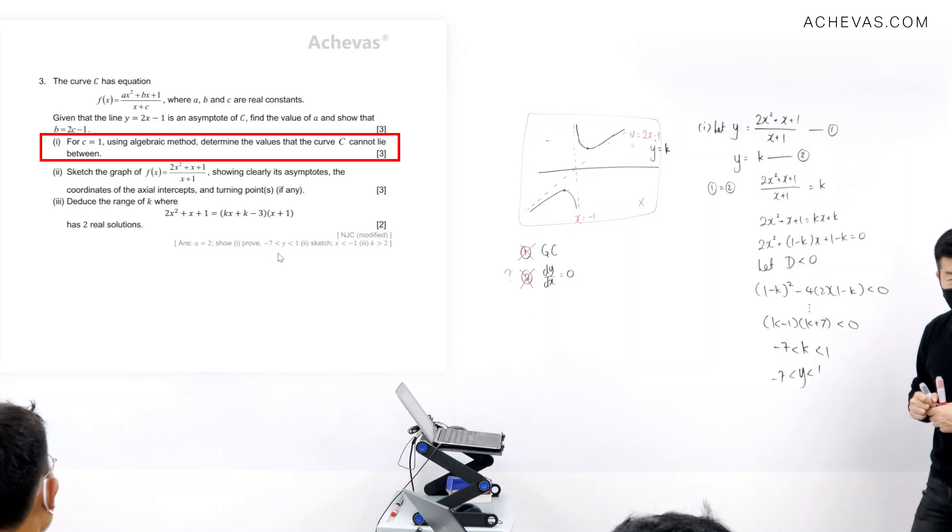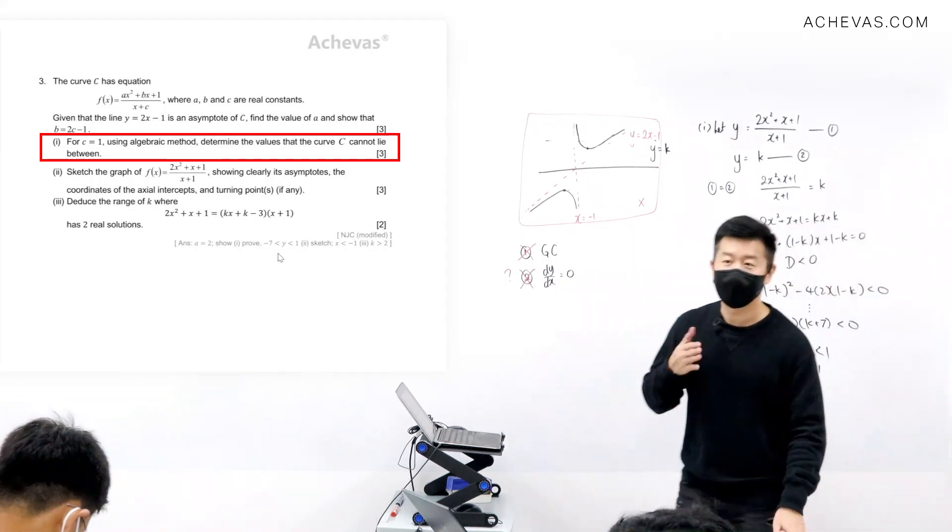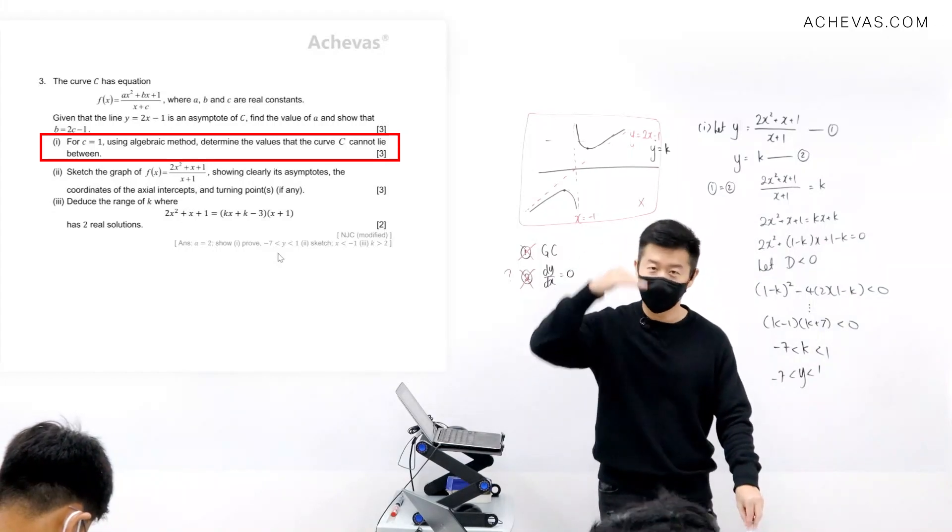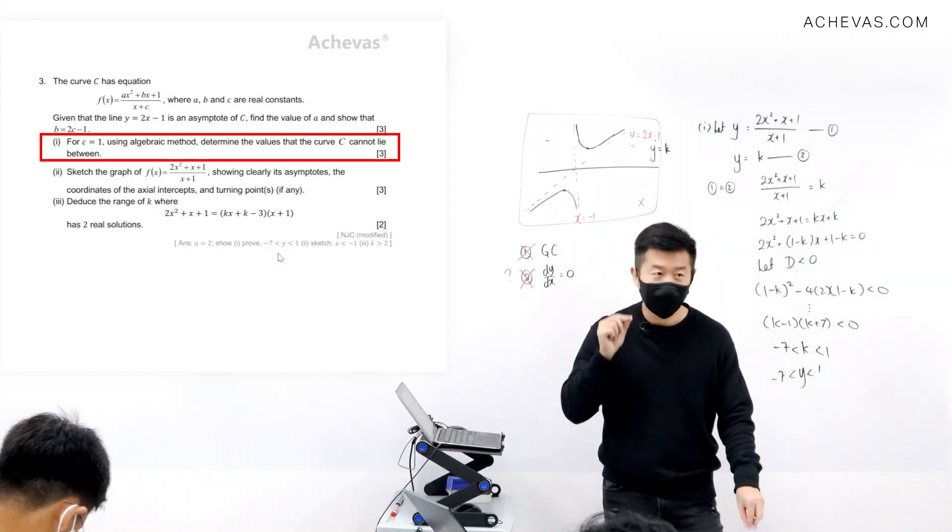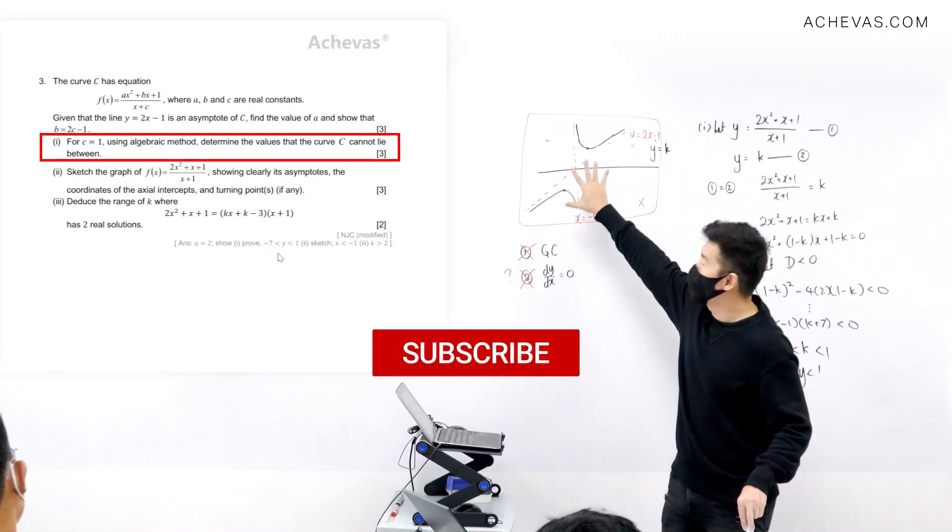Which means, as long as the horizontal line lies between minus 7 and 1, this horizontal line cannot cut the curve. And that is how we find the set of the region where the curve cannot lie between.